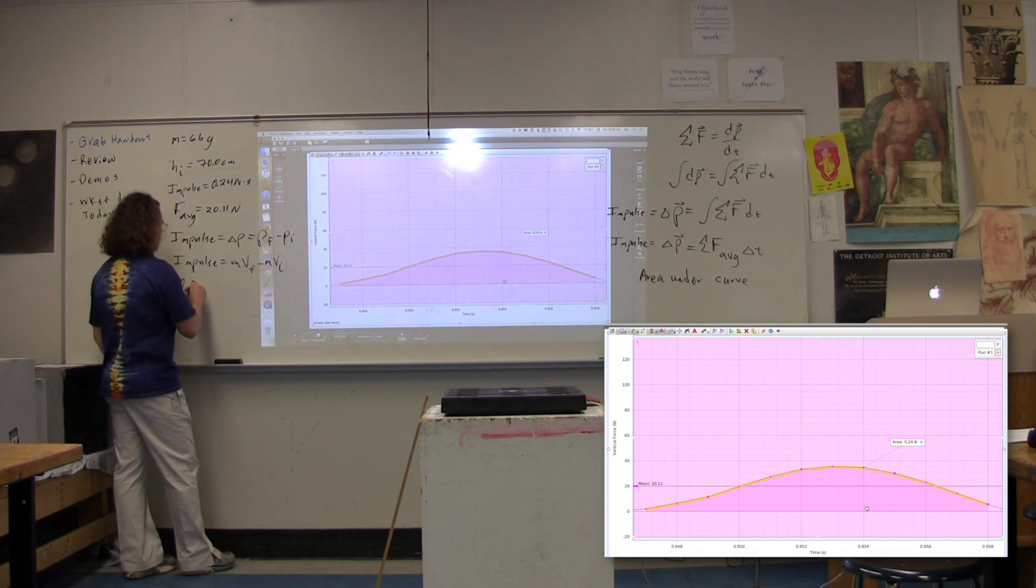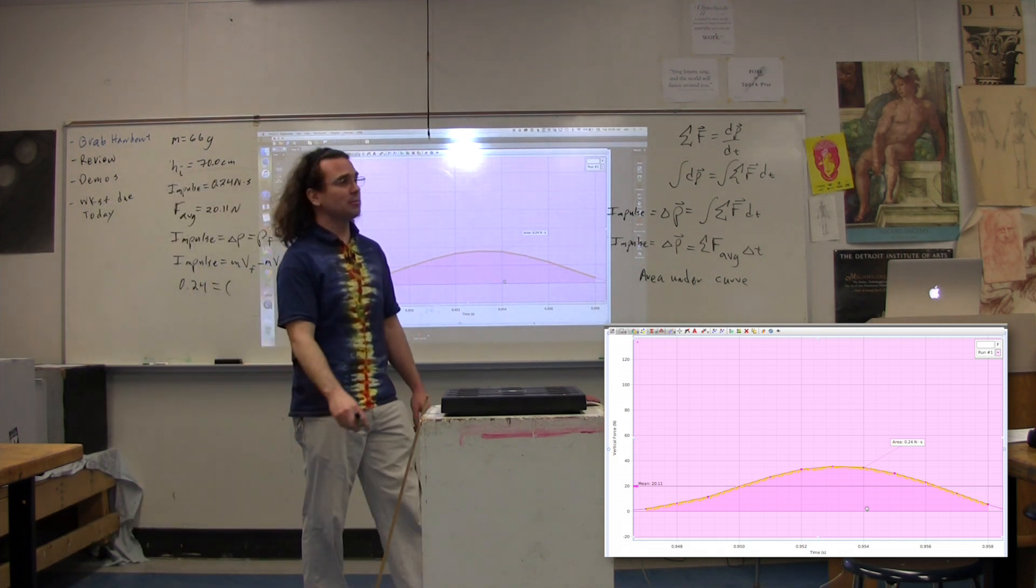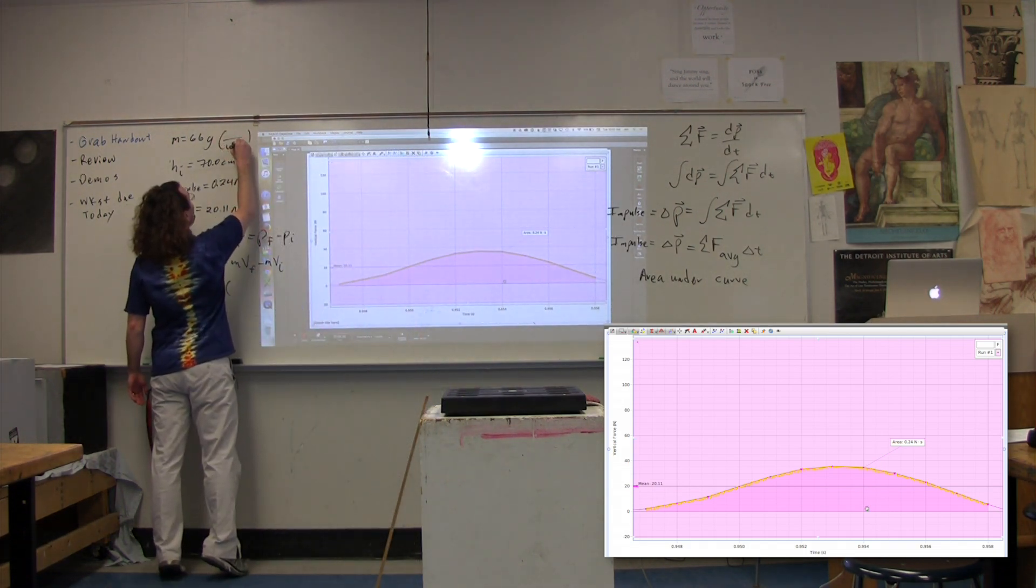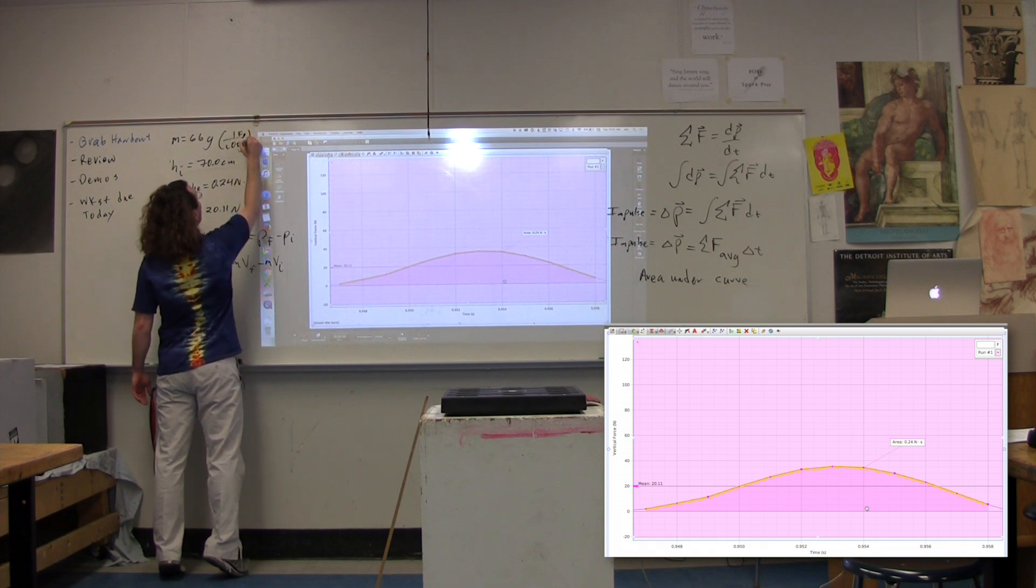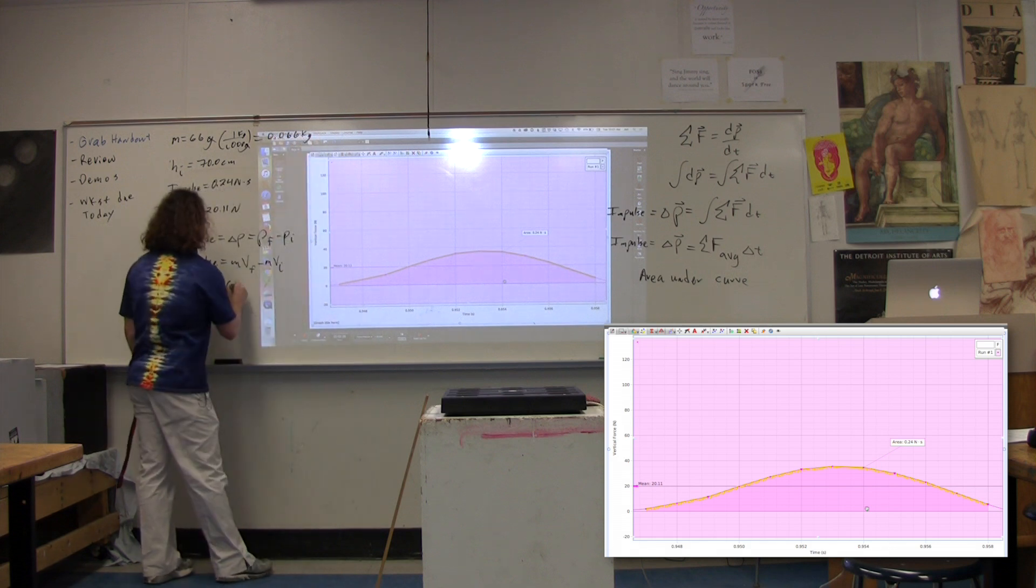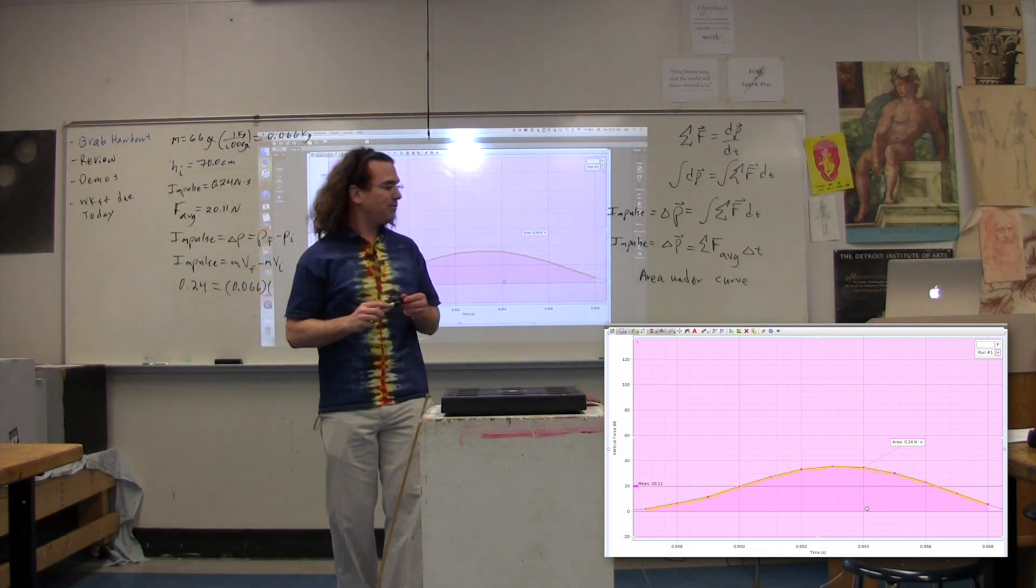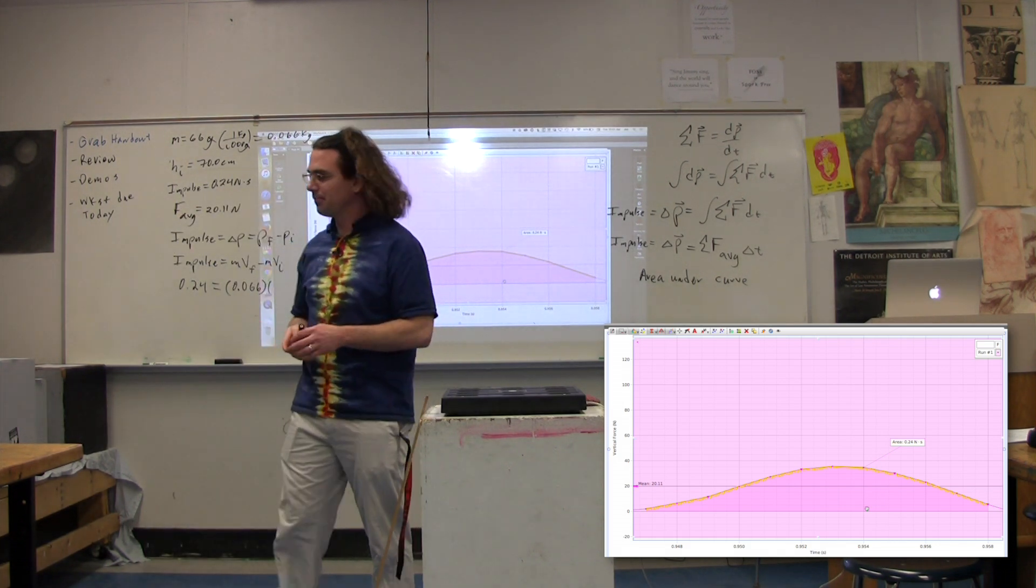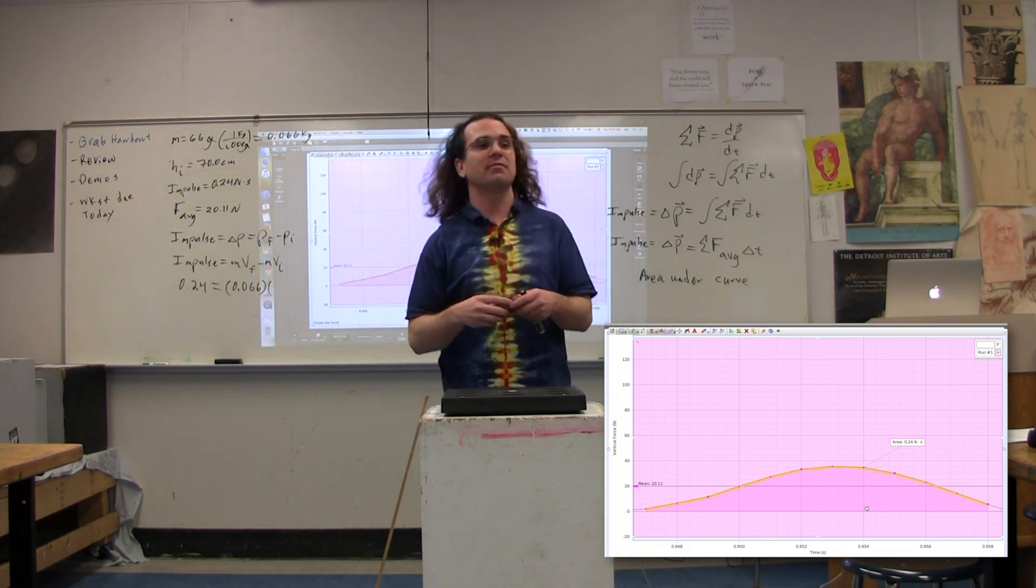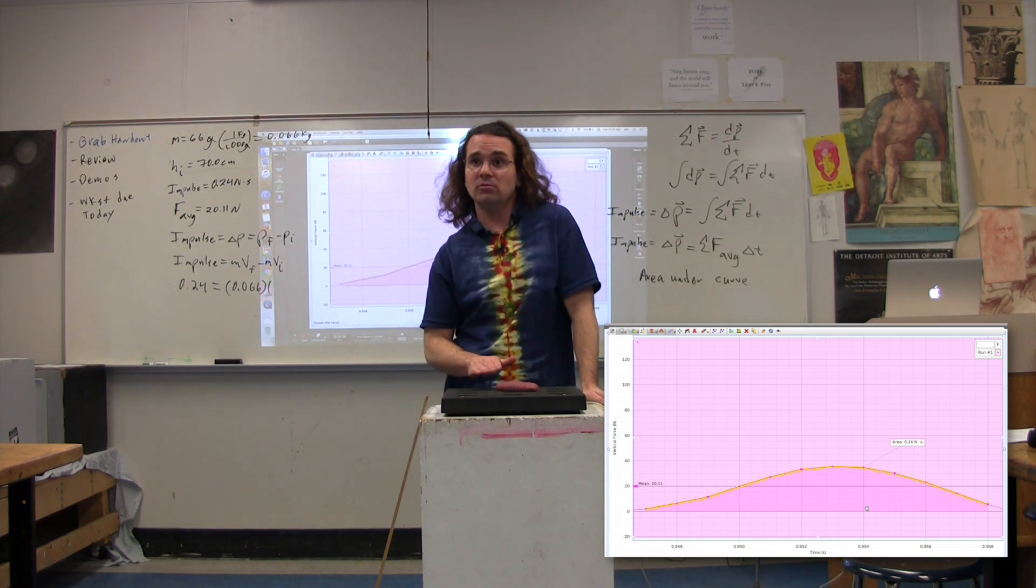We have the impulse, it's 0.24. We have the mass, it's 66 grams, but we need that in kilograms. So, that is 1,000 grams on the bottom, 1 kilogram on the top. We get 0.066 kilograms. 0.066 kilograms times velocity final. What is the final velocity? Where'd my beanbag go? It's right on C. What's the final velocity of the beanbag class? Zero.